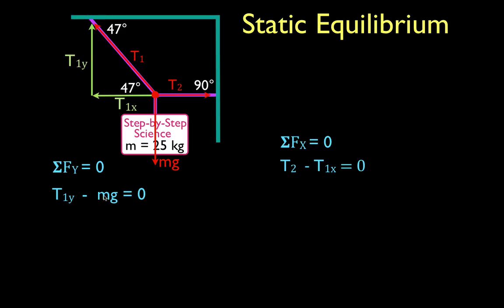The mass and acceleration due to gravity, so mg is equal to 245 newtons, 25 times 9.8. Now, we're going to use our trig functions to write a term for T1x and for T1y. You will notice T1x is adjacent to this angle in this right triangle. That means that T1x is equal to the cosine, adjacent cosine of 47 degrees times T1.